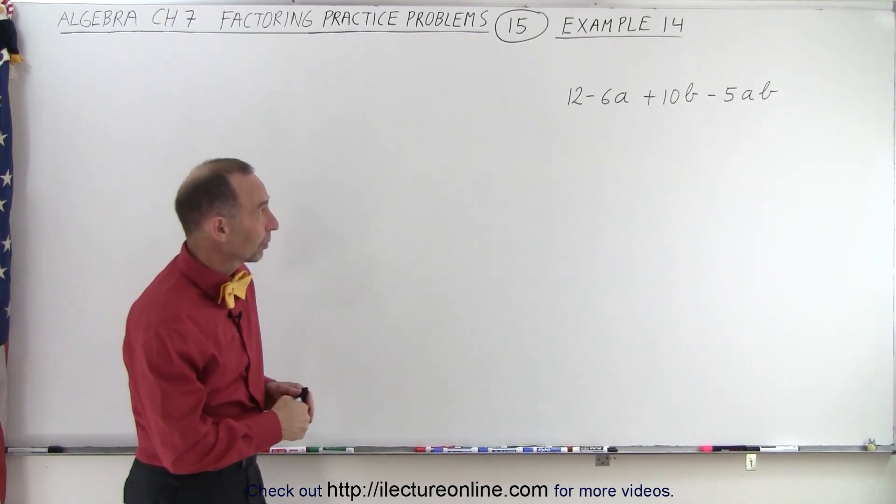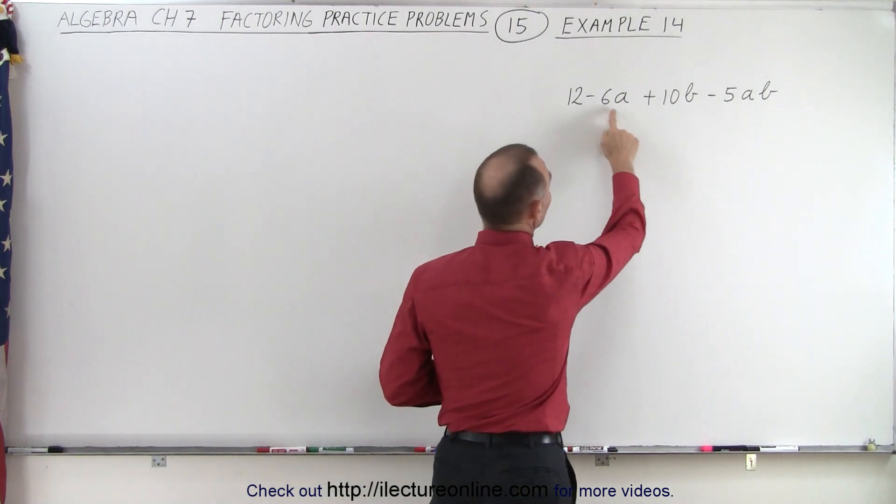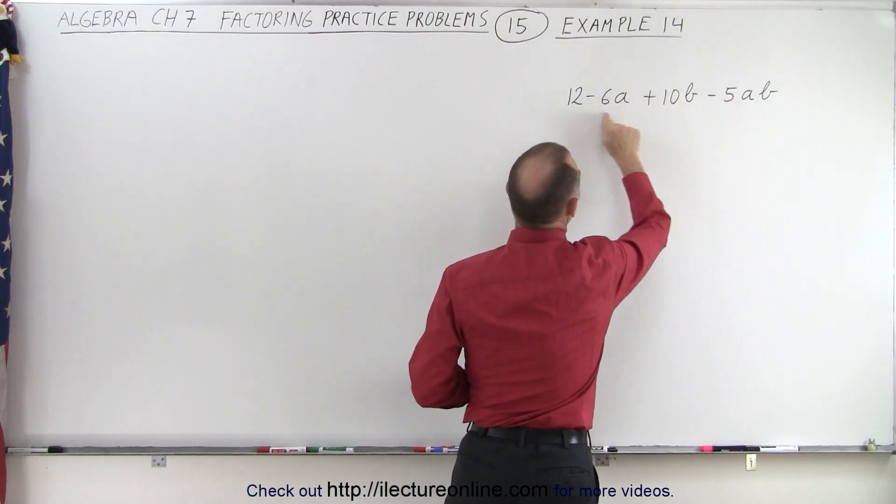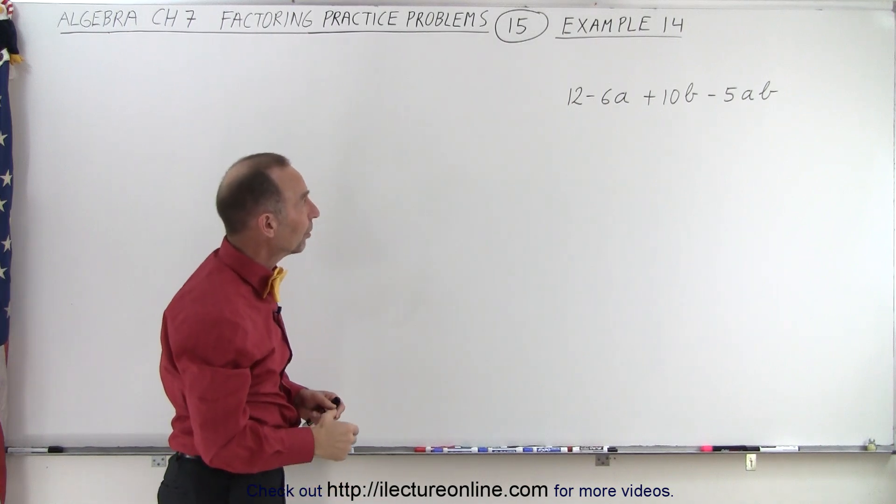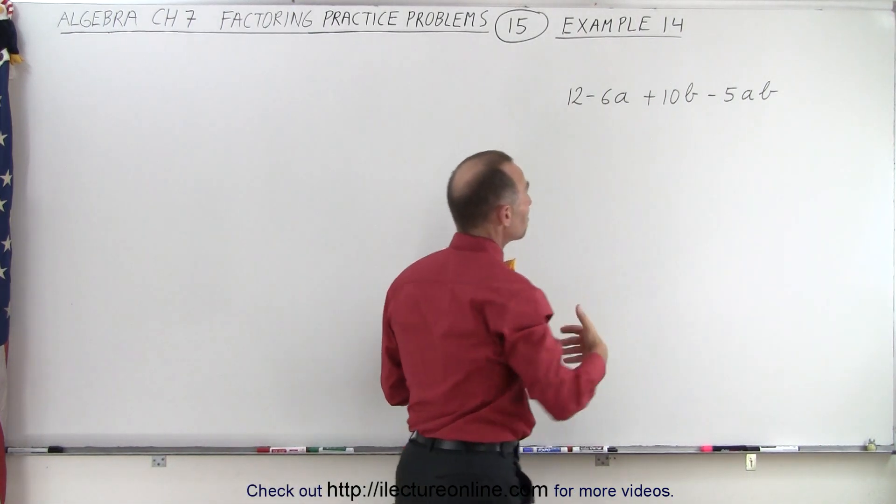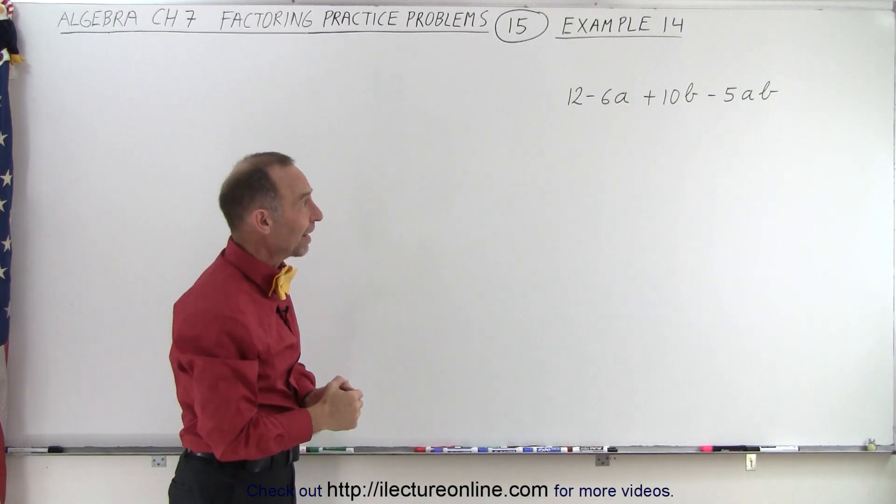Notice when we look at the numerical factors here, numerical coefficients, notice that this is odd and these are even, so we cannot factor out a common number, we cannot factor a common A or a B. You don't think that this can even be factored.